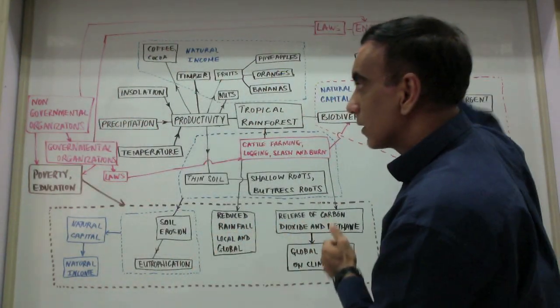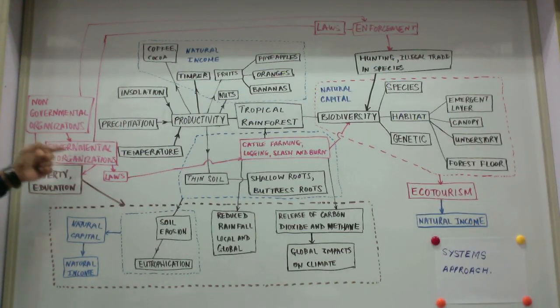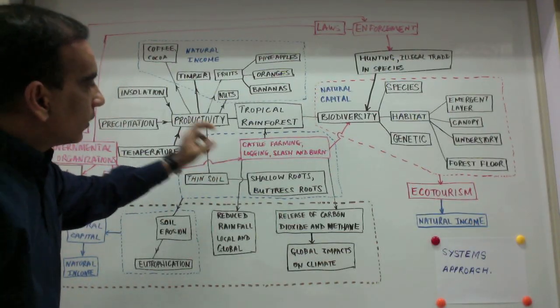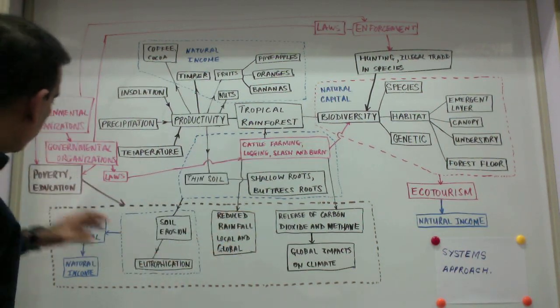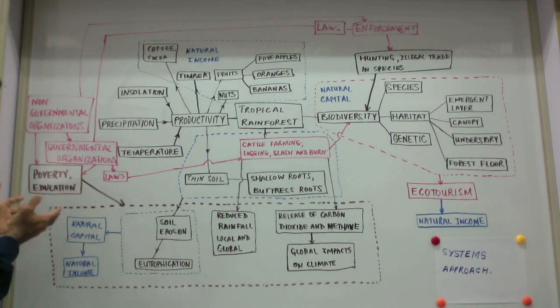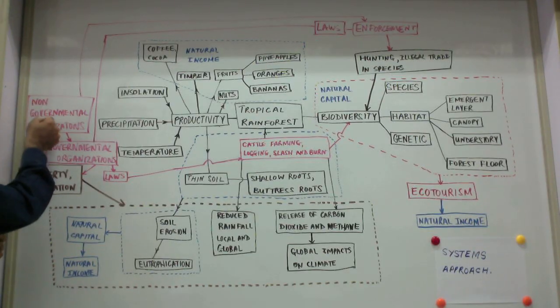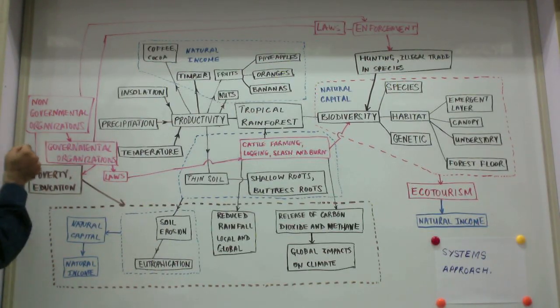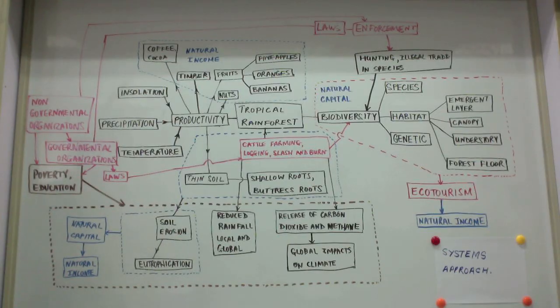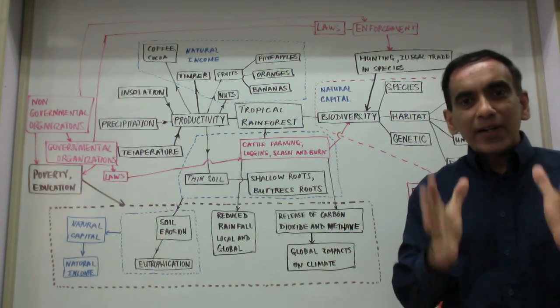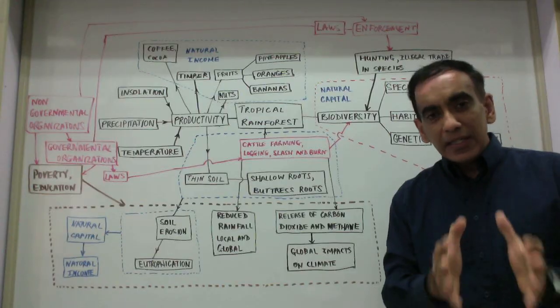Governmental organizations can also pass laws to reduce cattle farming, logging, and slash and burn agriculture. In addition, governmental organizations have a role to play in overall education and poverty eradication, and so too do the NGOs, the non-governmental organizations.